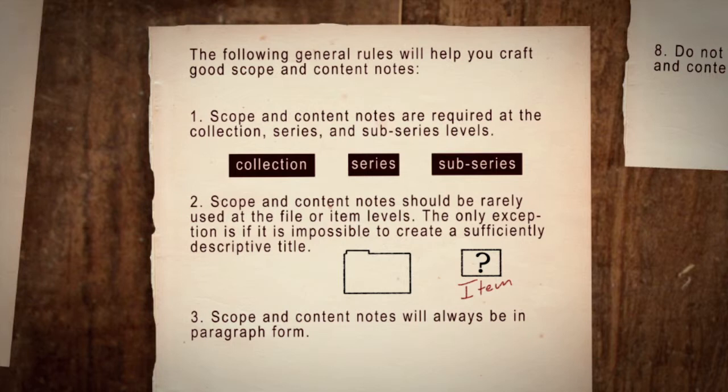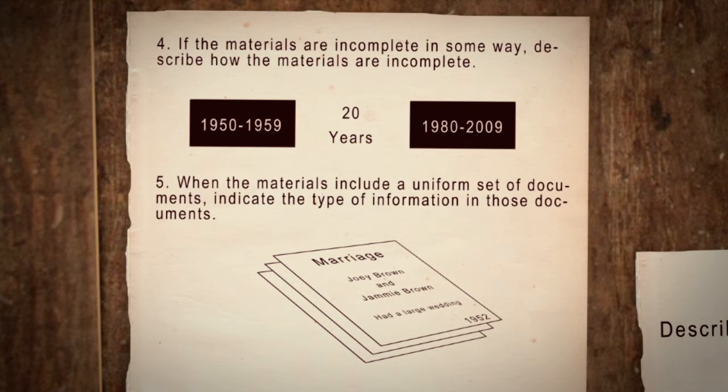Scope and content notes will always be in paragraph form. If the materials are incomplete in some way, describe how the materials are incomplete. For example, if the collection contains annual reports from the Division of Continuing Education, and the reports run from 1950 to 1959 and 1980 to 2009, then you would need to explain that there is a 20-year gap in the records.